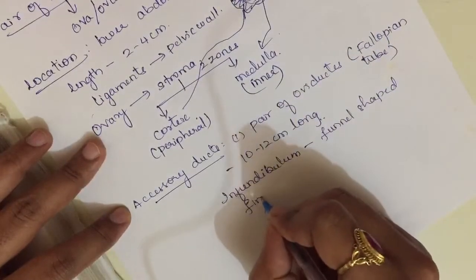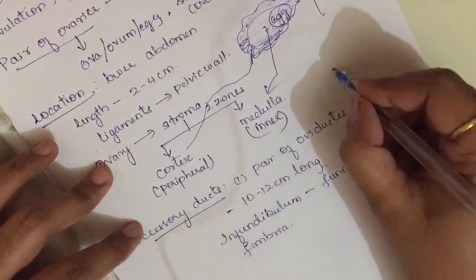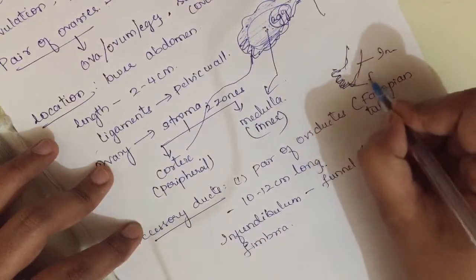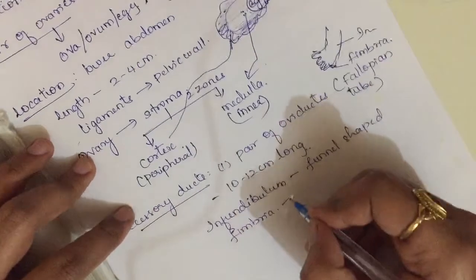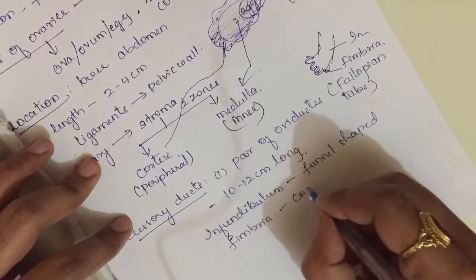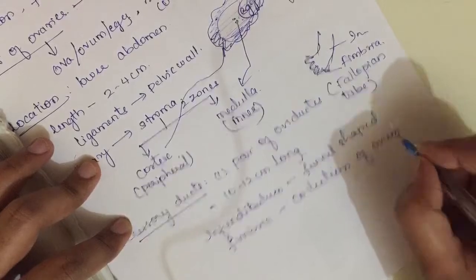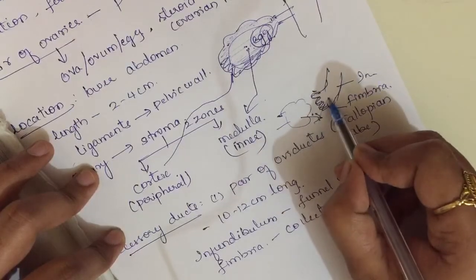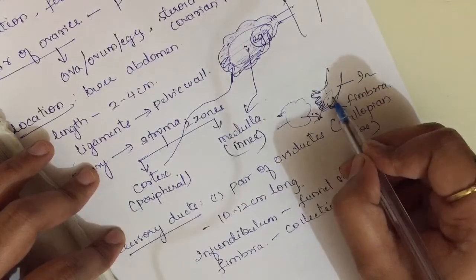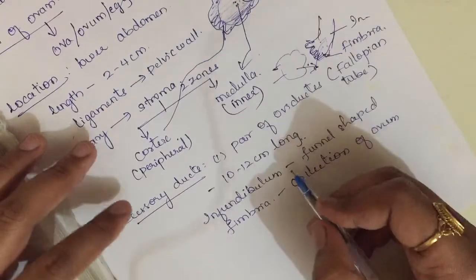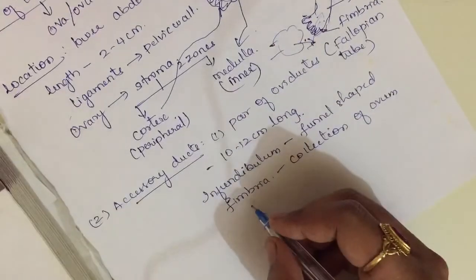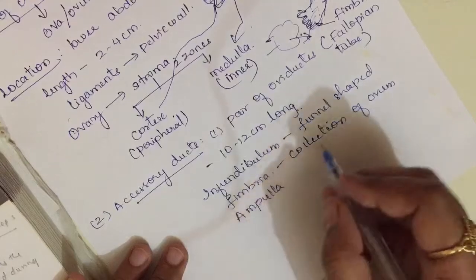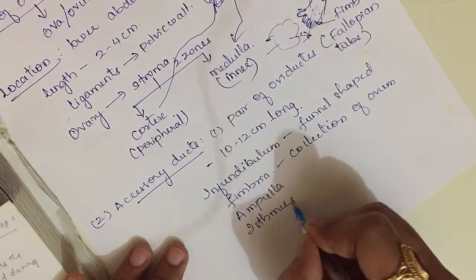The infundibulum has finger-like projections called fimbriae. The function of the fimbriae is to collect the ovum — when the ovary releases an egg, the fimbriae catch it so that it enters the Fallopian tube. After the infundibulum comes the wider portion called the ampulla.